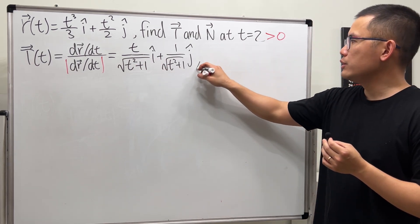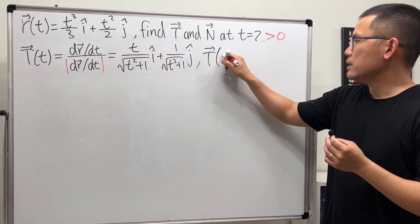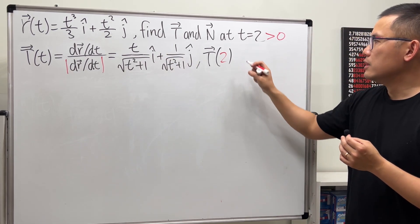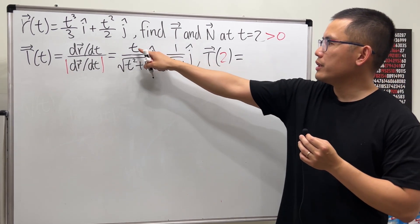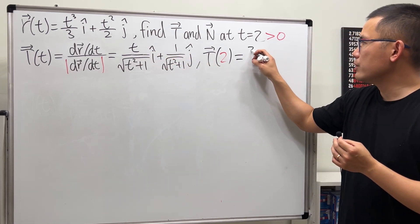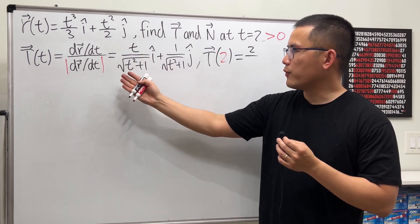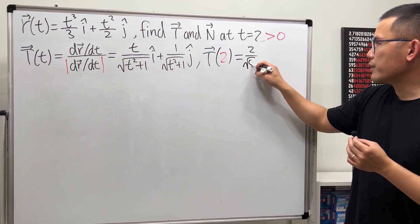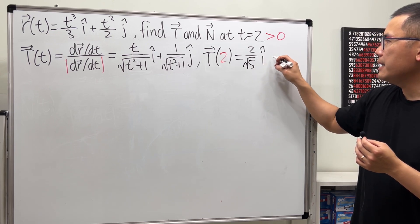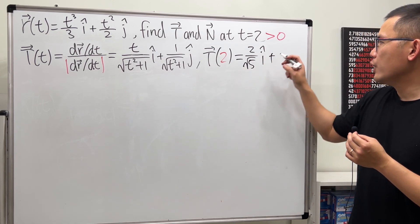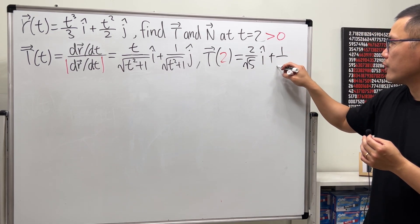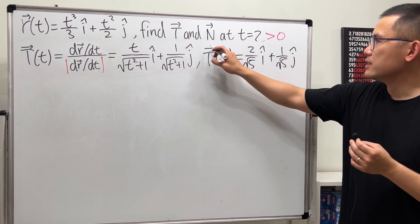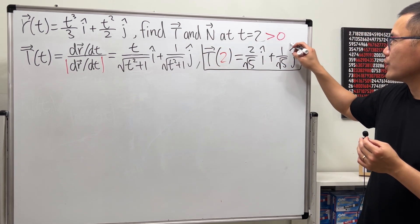Now we just need to plug in t equals 2 into all the t's. We get 2 over the square root of (4 plus 1), which is square root of 5, so 2 over square root of 5 for the i component. Putting 2 in the j component gives 1 over square root of 5 j. So T(2) = (2/√5)i + (1/√5)j.